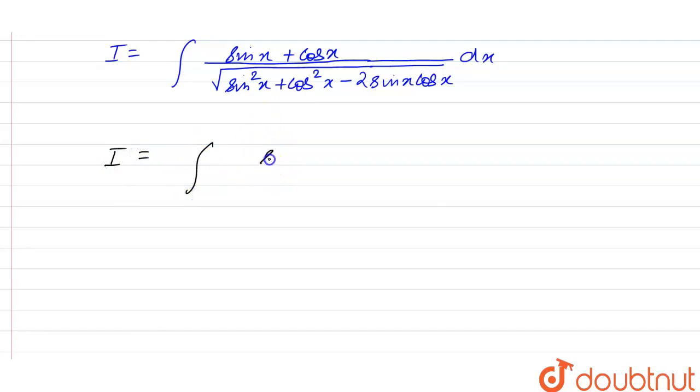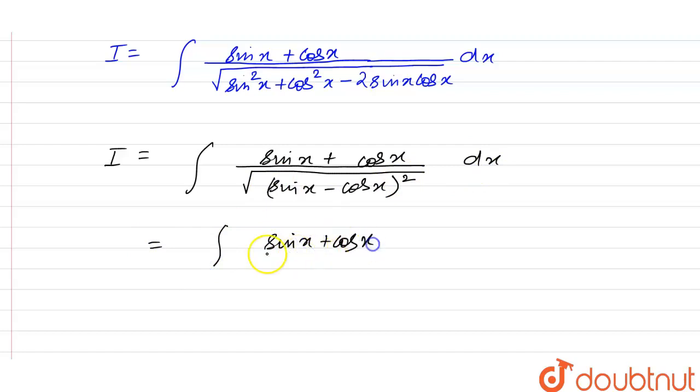So I is equal to we have integral of this is sine x plus cos x, and in denominator we have under root of this whole term is sine of x minus cos of x whole square.